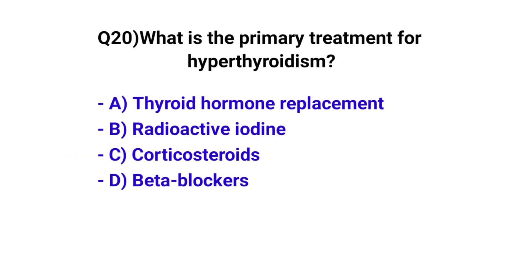Question number 20. What is the primary treatment for hyperthyroidism? The correct option is B. Radioactive iodine.